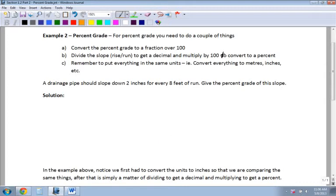Alright, for percent grade, you need a couple of things. You need to convert the percent grade to a fraction over 100. It's just like converting fractions to percents. Then you need to divide the rise over the run, the slope, to get the decimal, and then multiply by 100 to convert it to a percent.